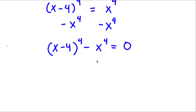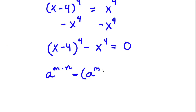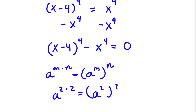Now I'm going to rewrite both of these terms using an important property of exponents. If I have something in the form a to the power of m times n, this is equal to a to the power of m to the power of n. In this case, (x minus 4) to the power of 4 and x to the power of 4 — we can think of these as a to the power of 2 times 2, because 4 equals 2 times 2. So I can rewrite these as a to the power of 2, to the power of 2.